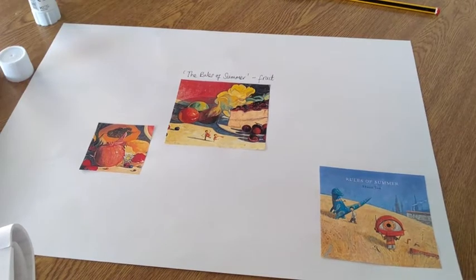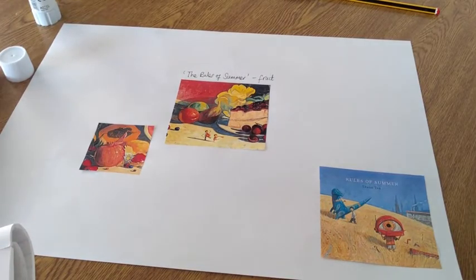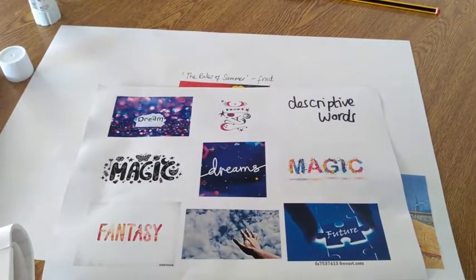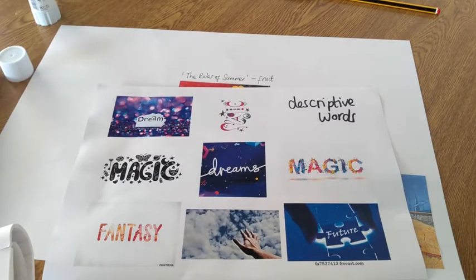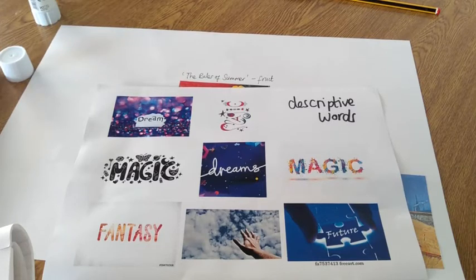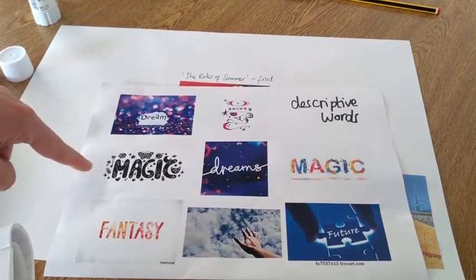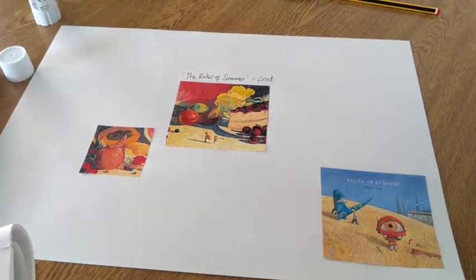I've got some nice descriptive words which explain how they make me feel — you might think of different words, which is absolutely fine. You might feel it's like magic — how can a huge piece of cake be bigger than a little boy? You might think it looks like the future, an upside-down world, almost like a video game or a dream situation, because in our dreams anything is possible. Select some of these words and collage them onto your page.